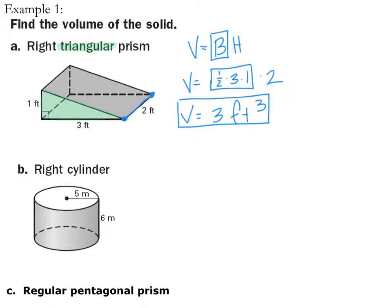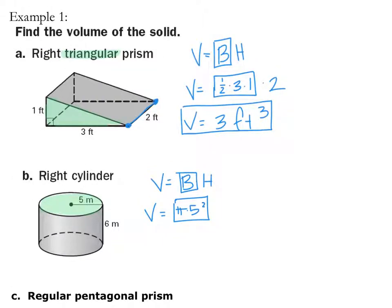Now, if I see a right cylinder, I know that this is my circle. That is going to be my base. So, volume equals base times height. Put B in a box, because then I know area of a circle is going to be pi R squared. And then my height is going to be 6.